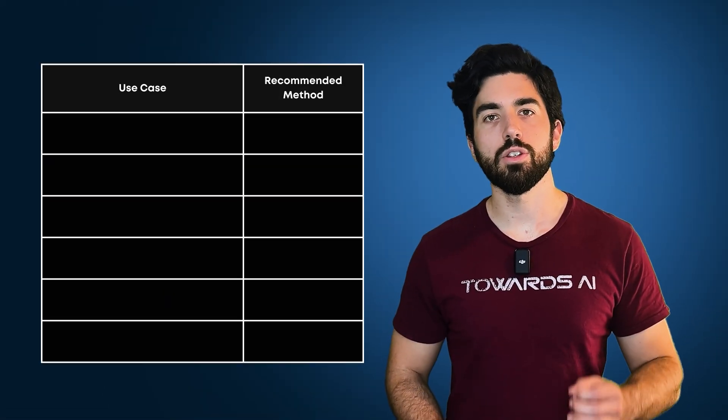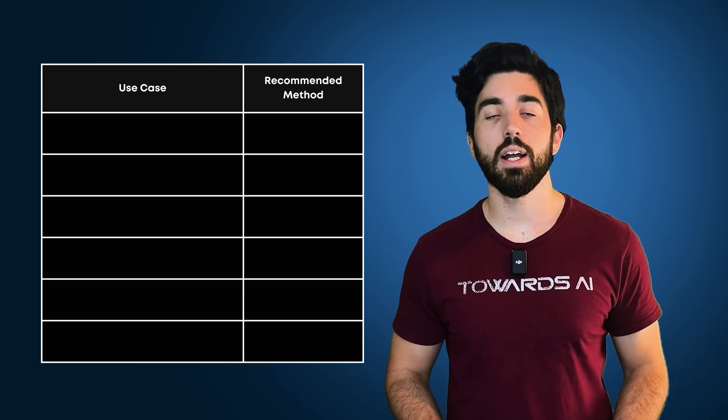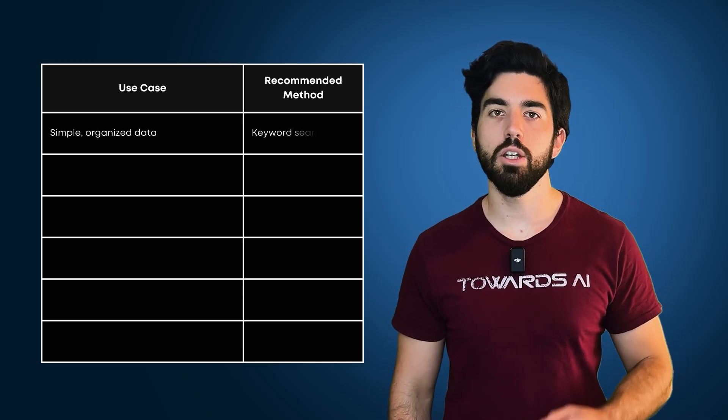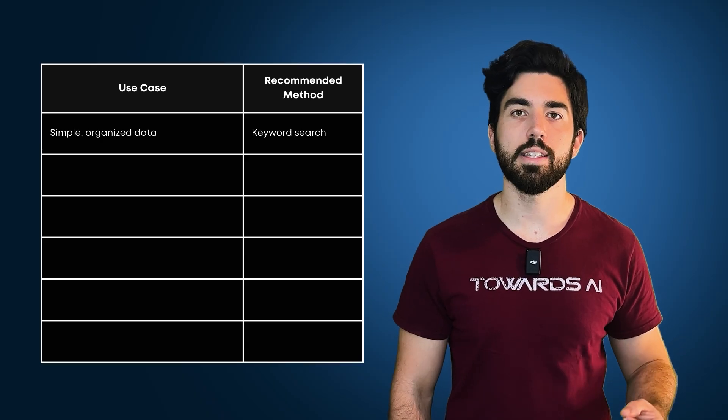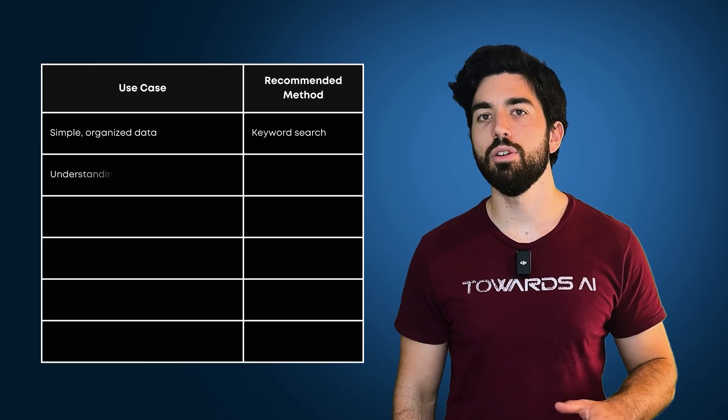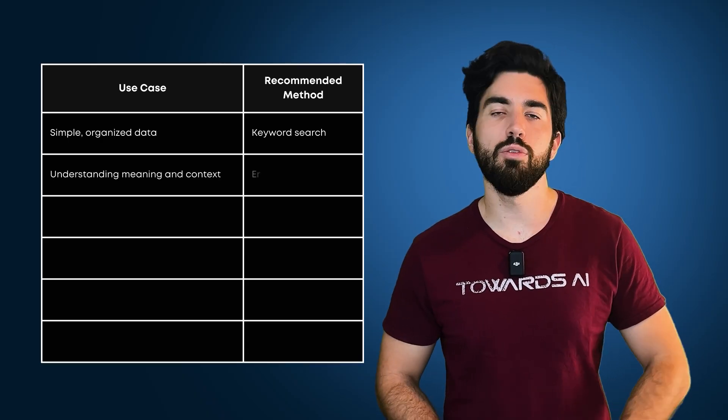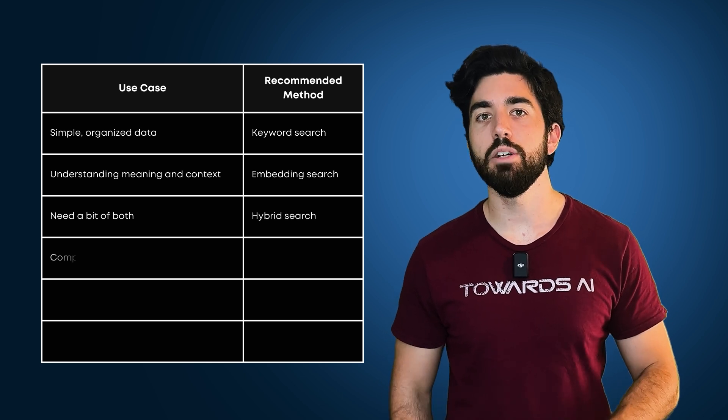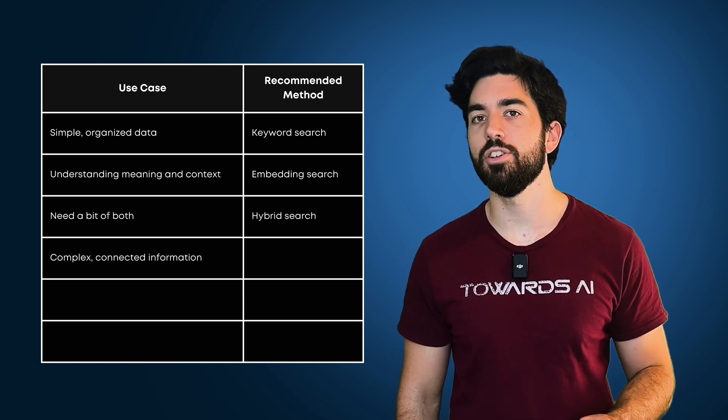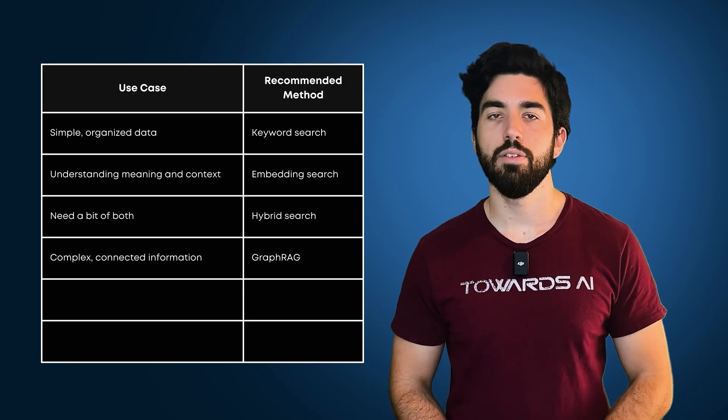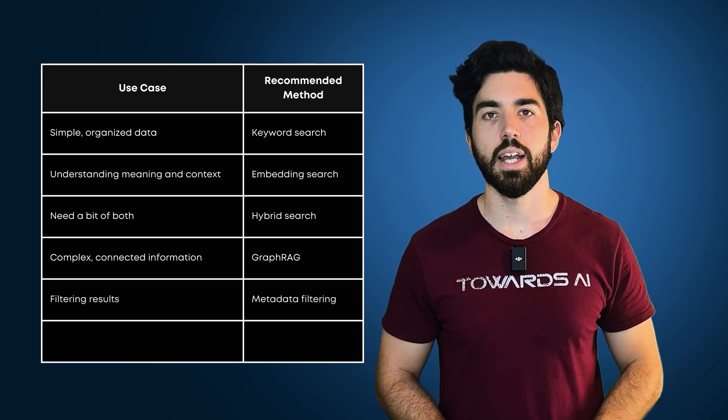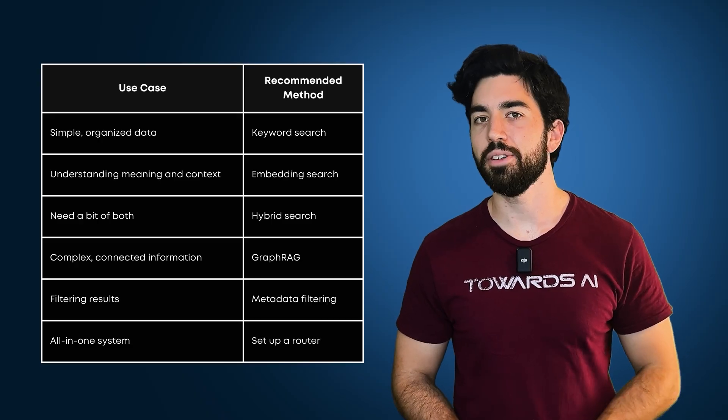So, which search technique should you use? Well, it depends on your need. For example, organized data, stick with keyword search or with an existing SQL database. If you need to understand meaning and context, go for embedding search. Want a bit of both? Try hybrid search. Dealing with complex connected information, consider GraphRAG. If you have a large dataset and need to filter results, try metadata filtering. And if you want a system that can do it all, try out a router.